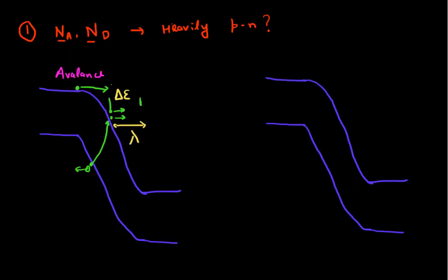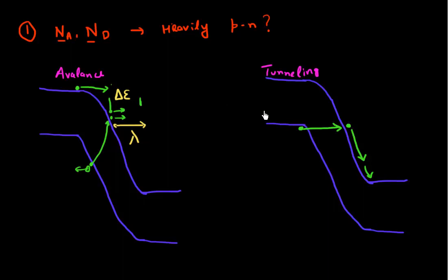Now thinking about how tunneling operates: tunneling involves electrons lying in the valence band that tunnel across this barrier and essentially become free electrons in the conduction band, contributing to reverse bias leakage. To overcome this energy barrier — represented by the shaded region — one way is to increase the doping. That's why the first question I asked my friend was about the doping. If it's highly doped, the depletion width decreases and the barrier for tunneling reduces. So that was the right question to ask.